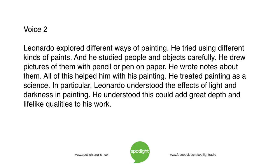Leonardo explored different ways of painting. He tried using different kinds of paints and studied people and objects carefully. He drew pictures of them with pencil or pen on paper and wrote notes about them. All of this helped him with his painting. He treated painting as a science. In particular, Leonardo understood the effects of light and darkness in painting, and how this could add great depth and lifelike qualities to his work.